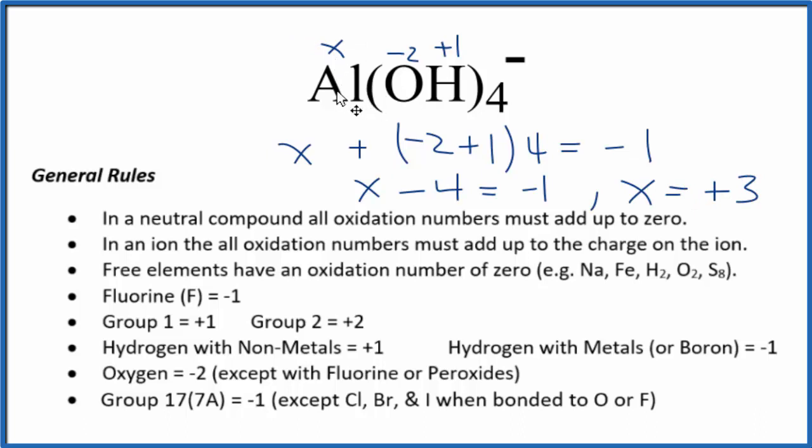In this case, the oxidation state for aluminum in Al(OH)4- is +3. If we add up all these oxidation numbers for each element, we get the charge on the ion, -1.